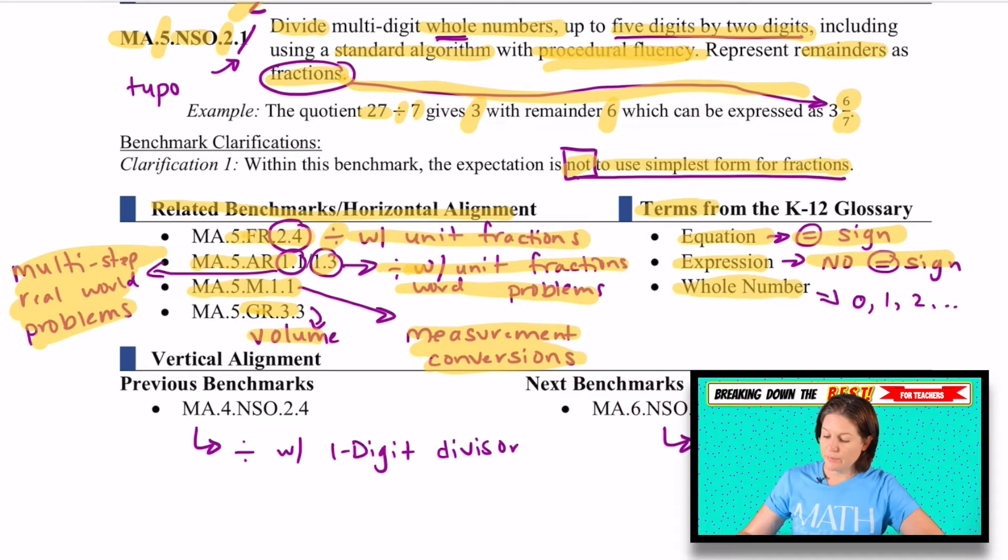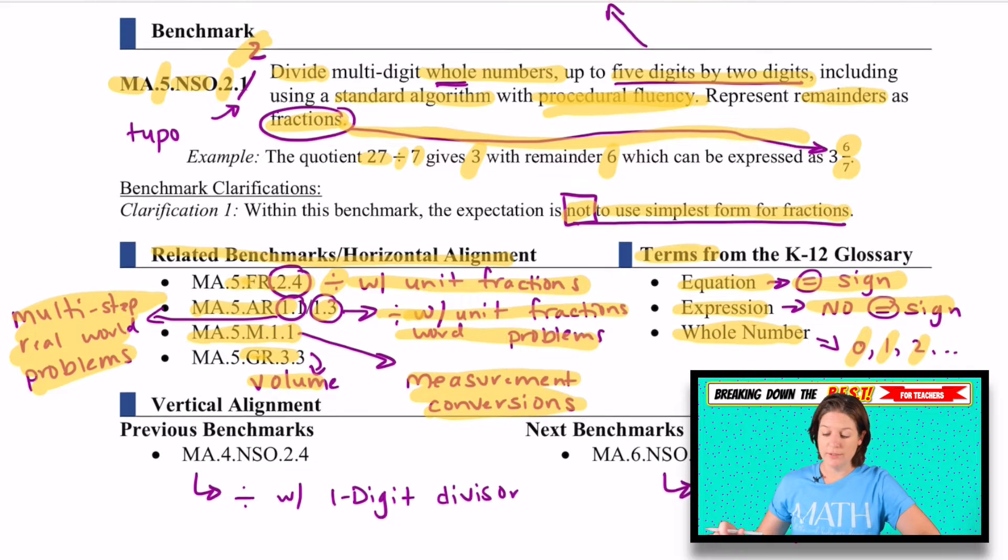And then whole number means that we're just working with numbers like 0, 1, 2. In other words, no negative numbers, no fractions, no decimals for this standard, even though, let me clarify, because we will have to express our remainders with fractions, but we're not dividing fractions in this one. We're only dividing with whole numbers. Cool.